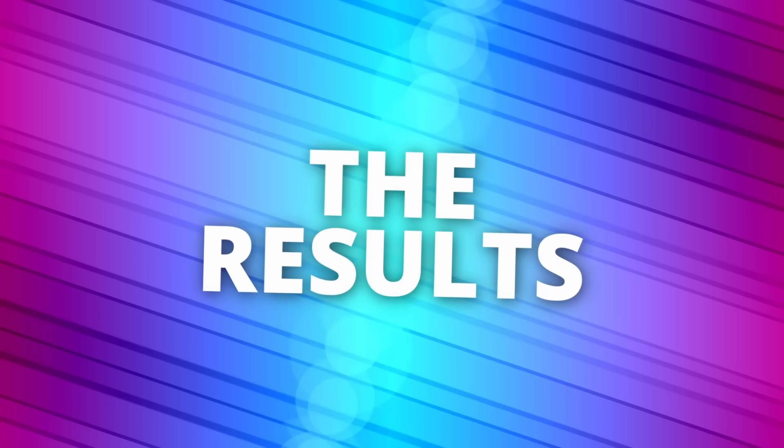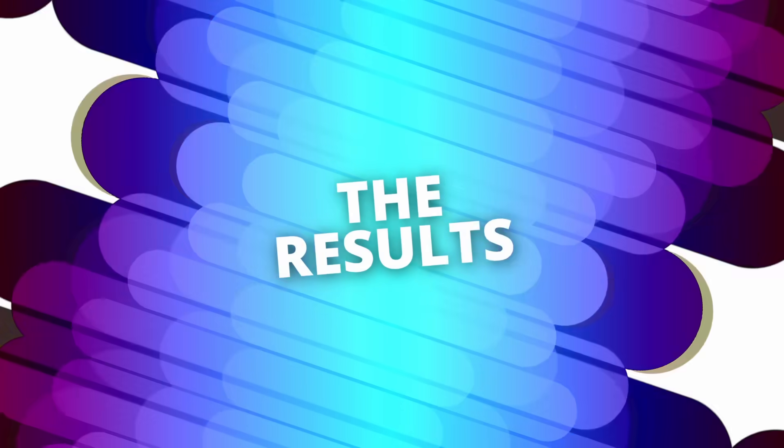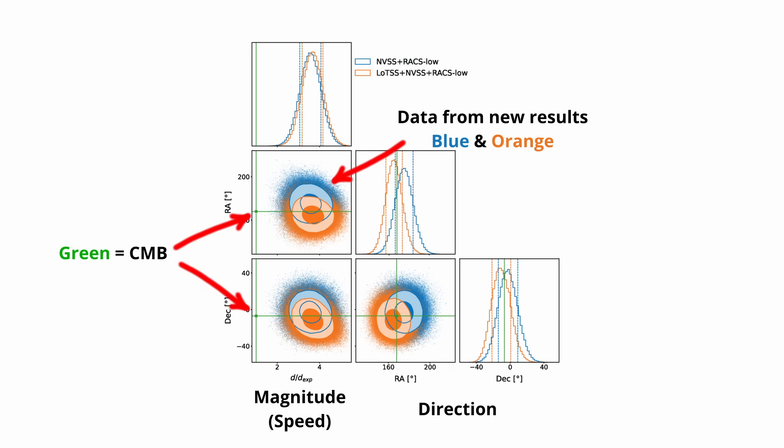If the story ended there, cosmologists would be celebrating. The direction matches the CMB exactly as the models predicted. But the other half of the results, the magnitude, doesn't just disagree, it blows the prediction apart. The velocity we get from the CMB gives us a very specific dipole strength. But the dipole measured in the new radio analysis isn't a little bit higher than that. It isn't even double, it's 3.67 times larger.